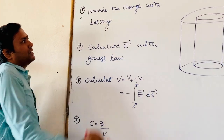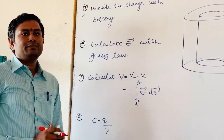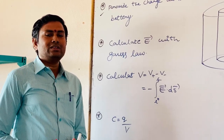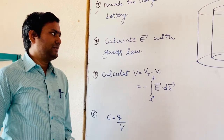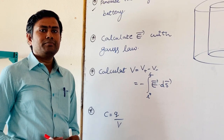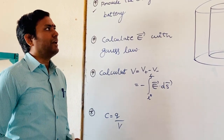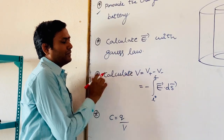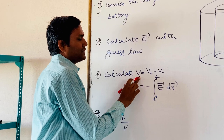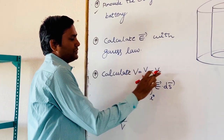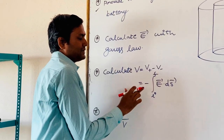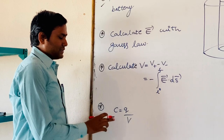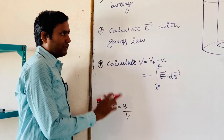The first step: provide the charge with a battery — we use one battery in order to charge the capacitor. After using the battery, we assume the cylindrical capacitor has achieved steady state. Second step: calculate the electric field between the plates of the cylindrical capacitor with the help of Gauss's law. Third step: calculate the potential difference between the plates, with the help of the expression V = V-plus minus V-minus = negative integral of E-bar dot ds-bar. Finally, we calculate the capacitance with the expression C = Q/V.